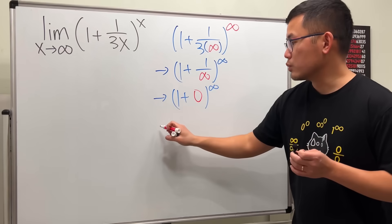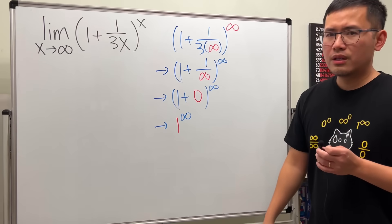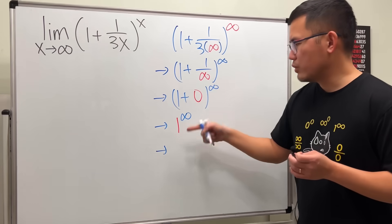And then 1 plus 0 is 1. So this is just 1 to the infinity's power. So the answer is just 1, right? Because 1 to any power is just 1.